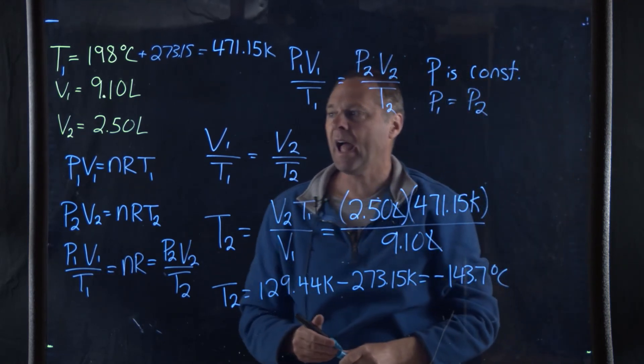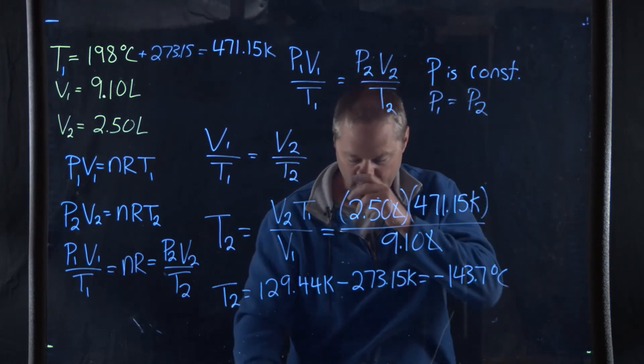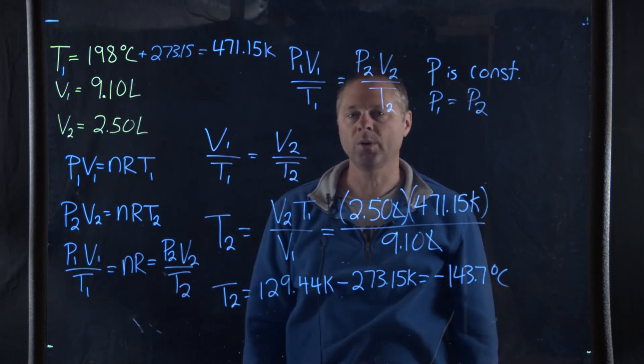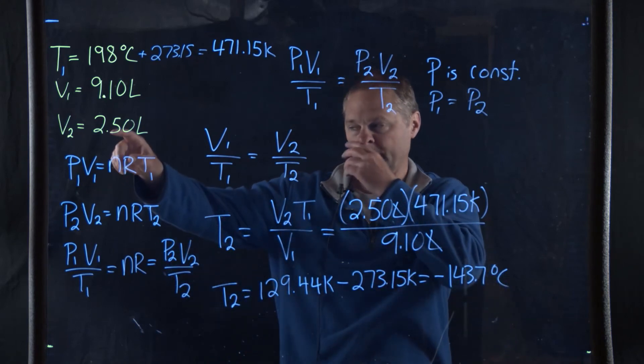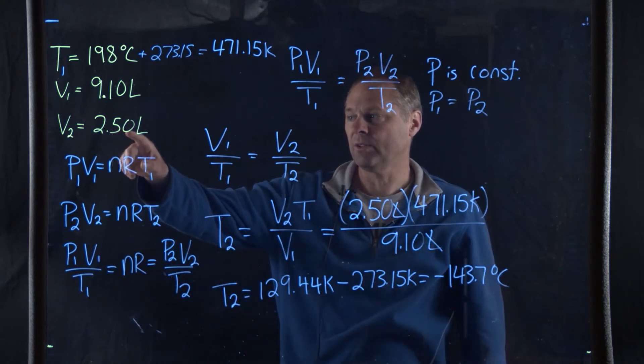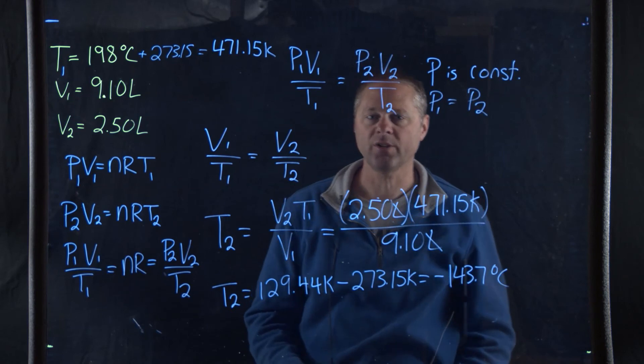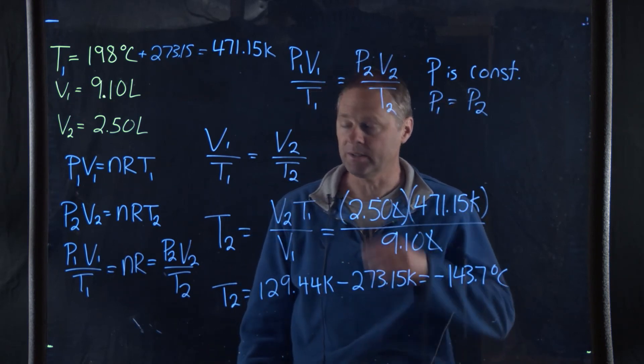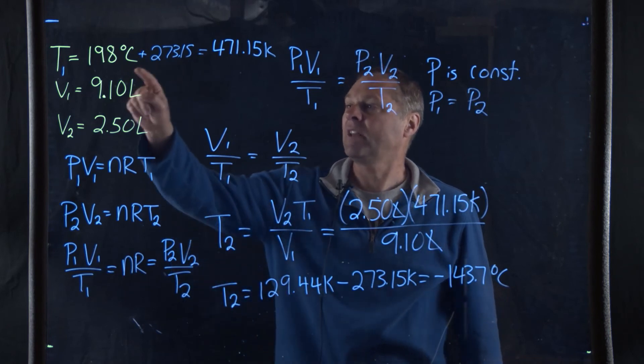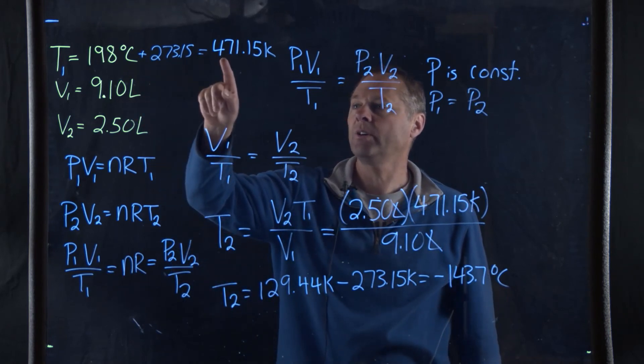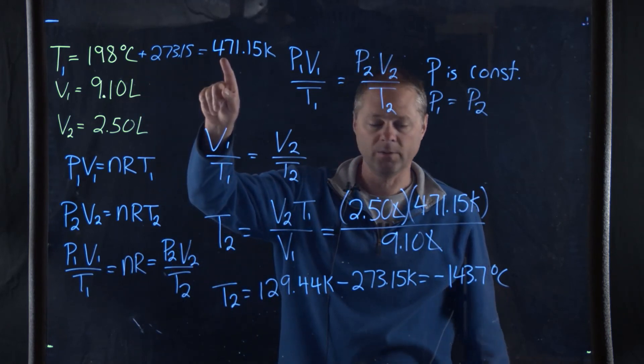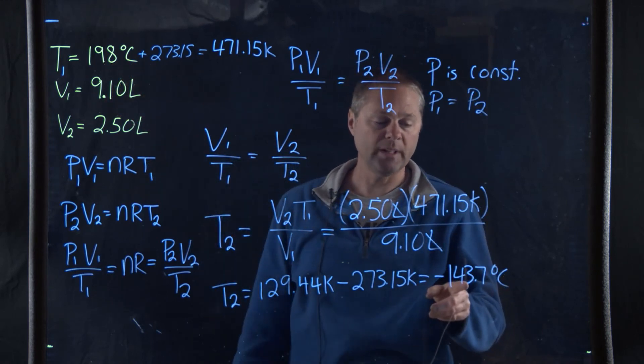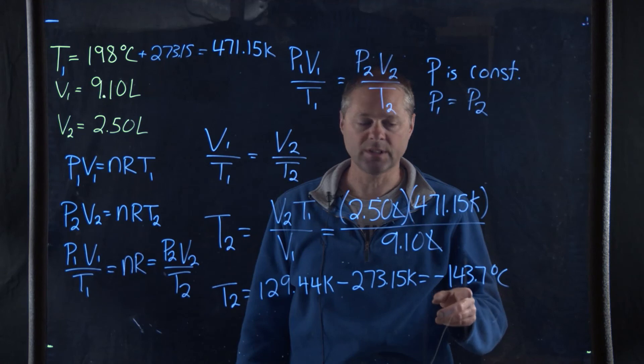What had to happen was, in order for this sulfur hexafluoride, which possessed a volume of 9.1 liters, in order for the final volume to be 2.50 liters at the exact same pressure, we could calculate the pressure if we want to, but it's not necessary. The temperature would have to be reduced from 471.15 Kelvin, or 198 degrees Celsius, to a negative 143.7 degrees Celsius.